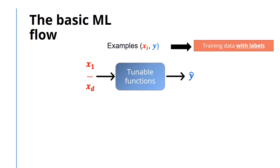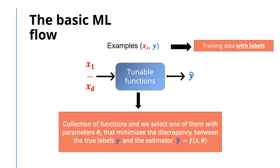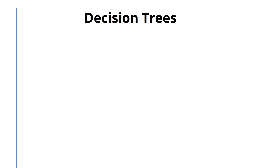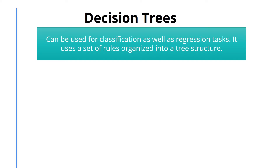However, there are many more. Today, we will talk about some other popular ones and their applications. Let's start off with decision trees. Decision trees are a classic method in machine learning. They can classify the inputs by using a set of rules organized into a tree structure.